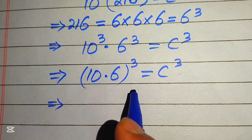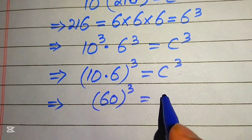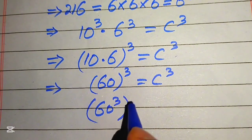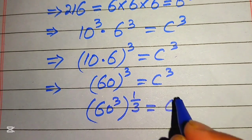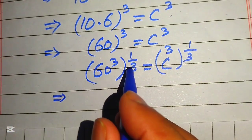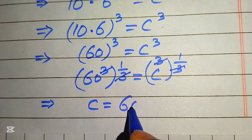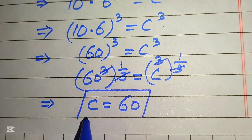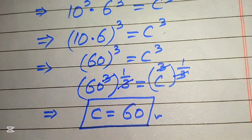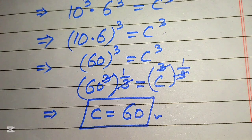Now we take the cube root on both sides. We have 10 times 6, which is 60, whole cubed equals C cubed. Taking the cube root of both sides: (60³)^(1/3) = (C³)^(1/3). The exponents cancel — 3 and 1/3 cancel on both sides — and we get our final real value: C equals 60. I hope you like this method; please don't hesitate to share other methods in the comments. Thank you so much for watching — please subscribe for more exciting videos!